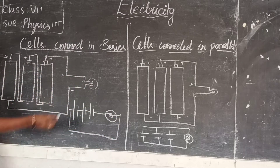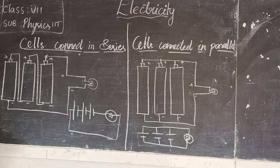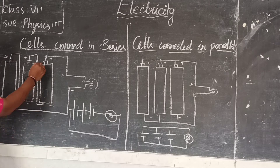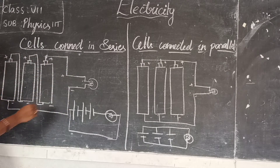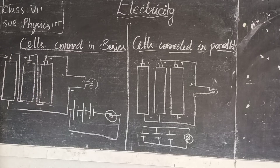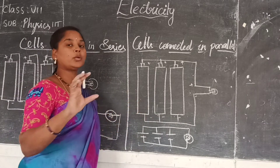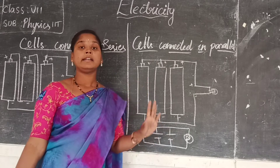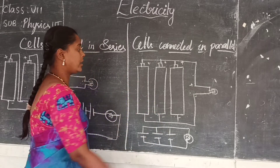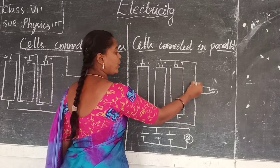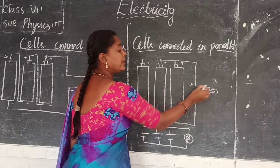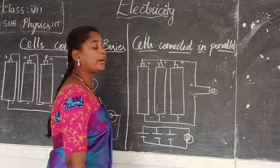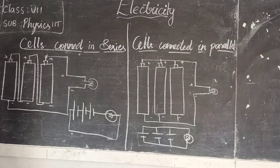In series, the bulb glows brightly. Why? Because there is only one bulb and it has the power of 3 cells, so it glows brighter. Whereas in parallel, the bulb glows only till its actual capacity, because it is getting only one positive terminal and one common negative terminal. So the bulb glows as if it is connected to only one cell.